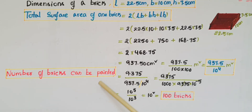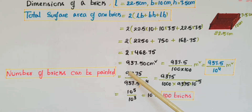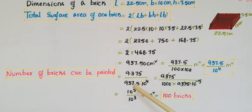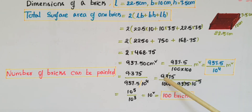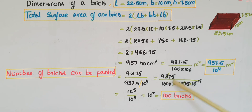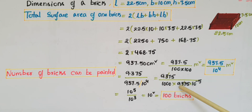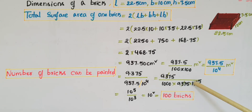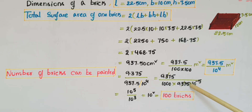Now, number of bricks that can be painted equals total area paintable divided by total surface area of one brick. That is 9.375 divided by 937.5/10⁴. We can write 9.375 as 9375/1000, and 937.5 as 9375/10, which is 9375 × 10⁻¹. Combined with 10⁴ in the denominator, we get 10⁻¹ × 10⁻⁴ = 10⁻⁵ in the denominator of the divisor.